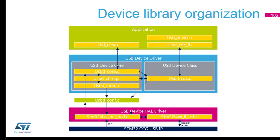We have the core files — usbd_core.c will handle all the setup requests and route requests to control request handlers or to the class if it's a class request. Then in the class you can communicate with the application through the CDC interface — the one we already modified together when we want to send or receive something on the VCP.